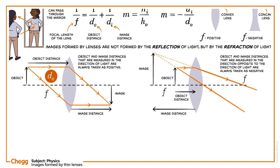Object distance is positive and image distance is also positive. Object distance is positive and image distance is negative. The sizes measured above the principal axis are taken as positive and the sizes measured below the principal axis are taken as negative.